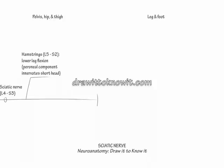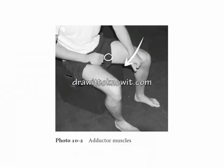Next, show the sciatic nerve helps supply adductor magnus, even though the obturator nerve is its primary innervator. Bring your knees together to demonstrate adductor magnus' action.